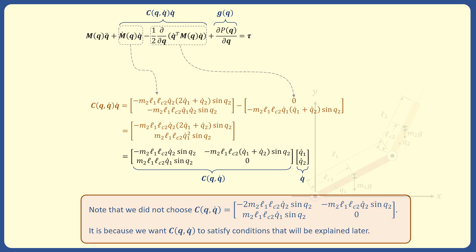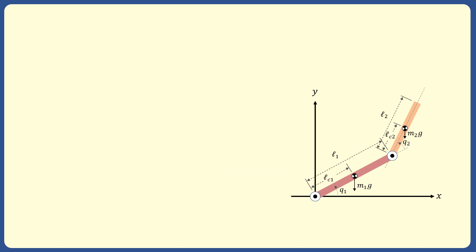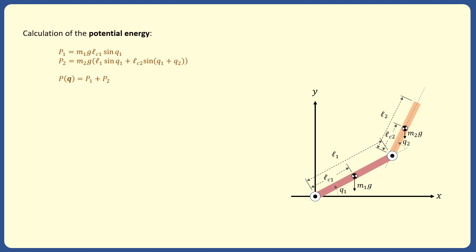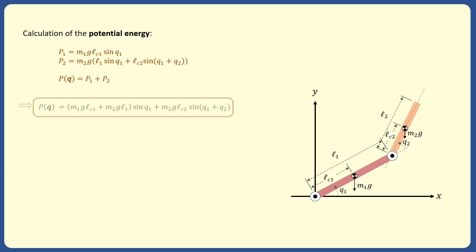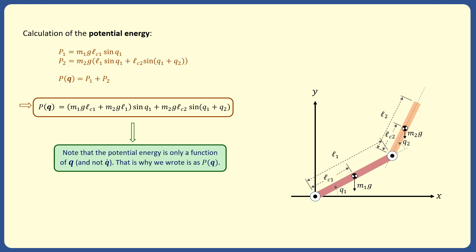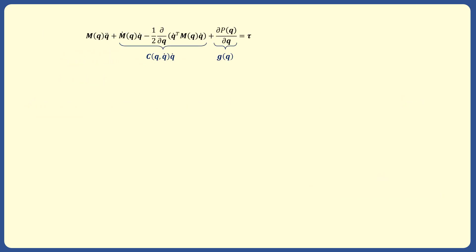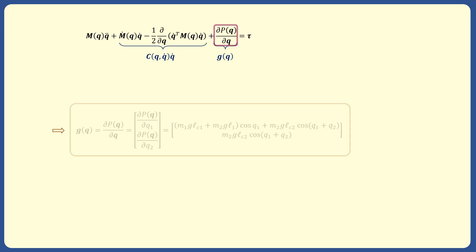We finally calculate the total potential energy p and find the vector of gravity forces g by taking the partial derivative of p with respect to q. We calculate the potential energy associated with masses m1 and m2 and add them to find the total potential energy of the system, assuming potential energy is zero at y equals zero. The resulting expression for total potential energy is only a function of q and not q-dot, which is why it is written as p of q. The vector g is then obtained by taking the partial derivative of p with respect to q, as shown.